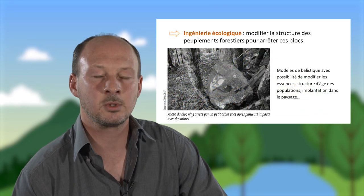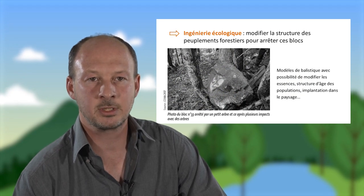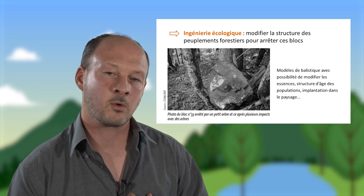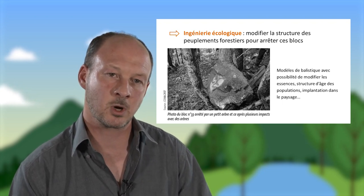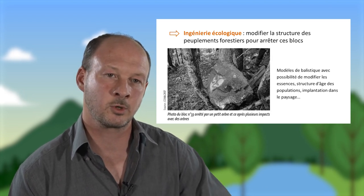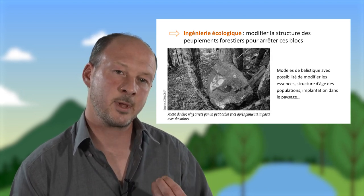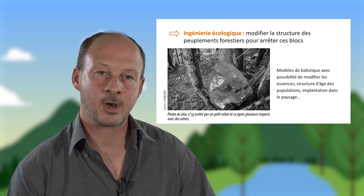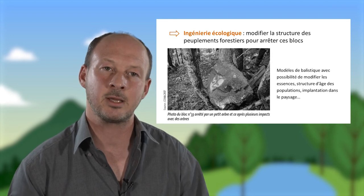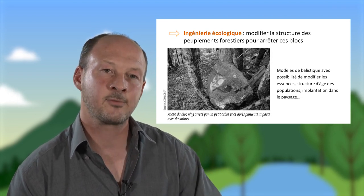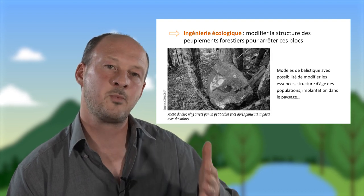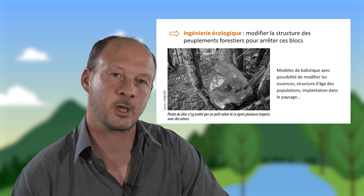Une autre solution développée par l'ingénierie écologique consiste à réfléchir à la structure des peuplements arborés, en faisant des expérimentations de lâchers de blocs ou des modèles de chutes de blocs de pierre. On fait passer ces blocs dans des forêts dont on fait varier les essences d'arbres et la structure d'âge des peuplements, c'est-à-dire la taille des troncs, afin de déterminer quelle structure du peuplement arboré sera la plus apte à faire barrière à ces blocs de pierre.